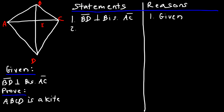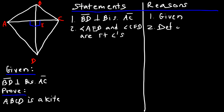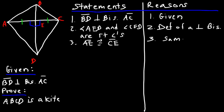We start with the given: BD is the perpendicular bisector of AC. Because they're perpendicular, they form right angles, so angles AED and CED are right angles — by the definition of a perpendicular bisector. Also, because BD bisects AC into two congruent parts, AE is congruent to CE — same reason.